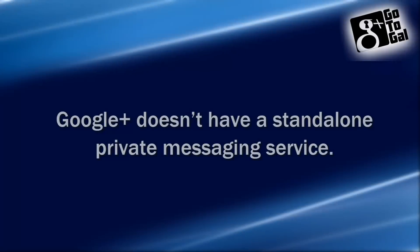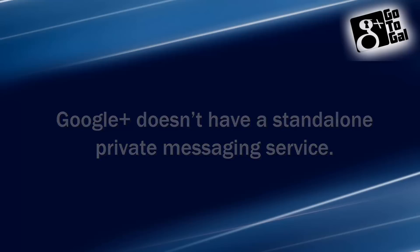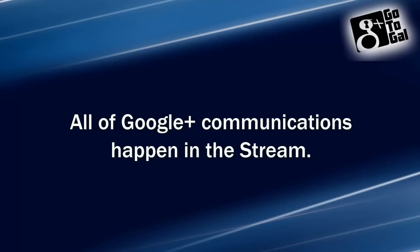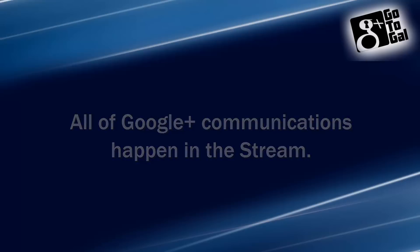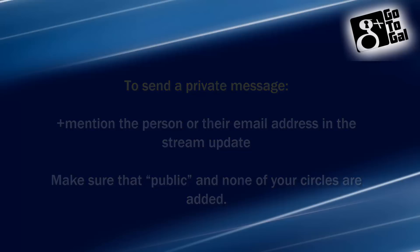Unlike Facebook or Twitter, Google+ doesn't have a standalone private messaging service. All of Google+ communication happens in the stream, and you control whether your messages are private or public by specifying who you share your posts with. To send a private message, simply mention the person or their email address in the stream update, and make sure that public and none of your circles are added. So let's see how it's done.